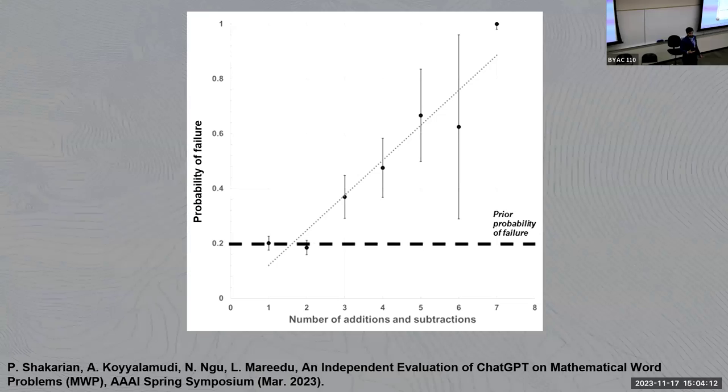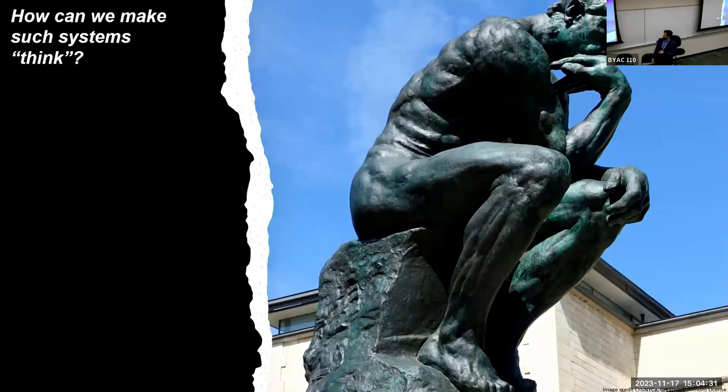I think it's because it can't do multi-step reasoning. It can maybe get away with its kind of memorization, or some people call it the stochastic parrot, to a point, but then at some point it makes one mistake and that mistake propagates through the rest. So can such systems think?